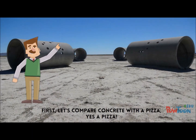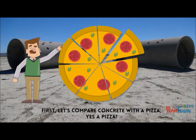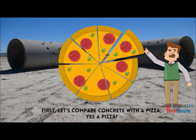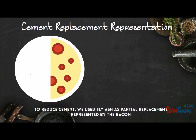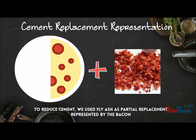First, let's compare concrete with a pizza — yes, a pizza. Our cement ingredient will be represented as pepperoni. To reduce cement, we use fly ash as a partial replacement, represented by the bacon.